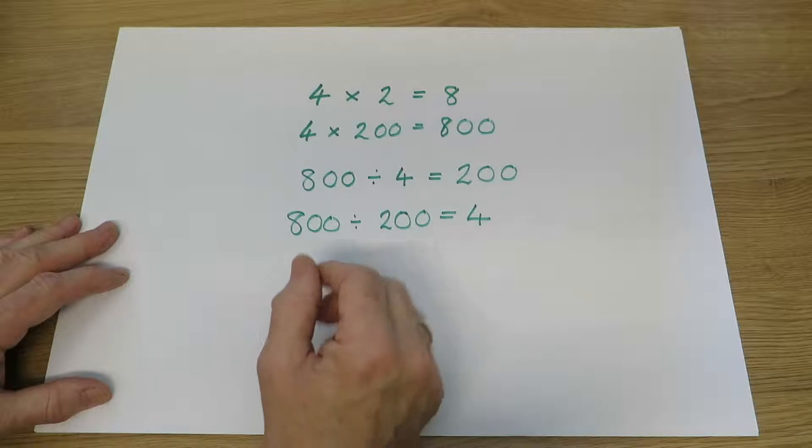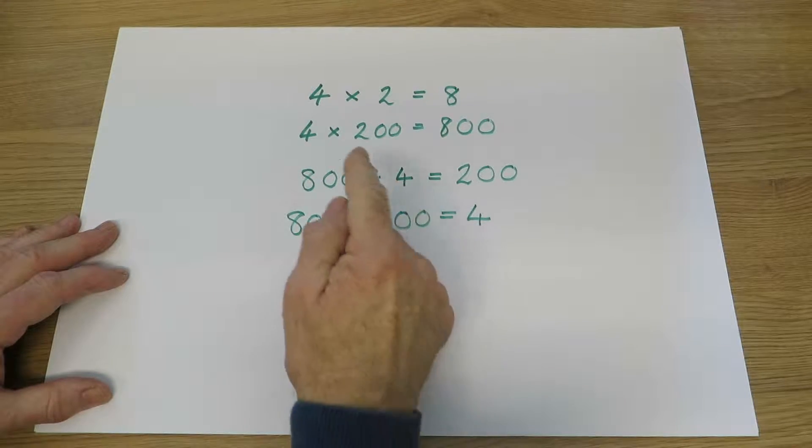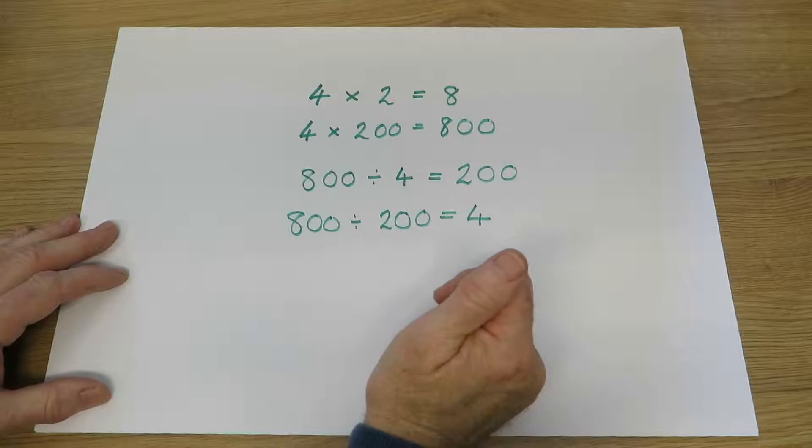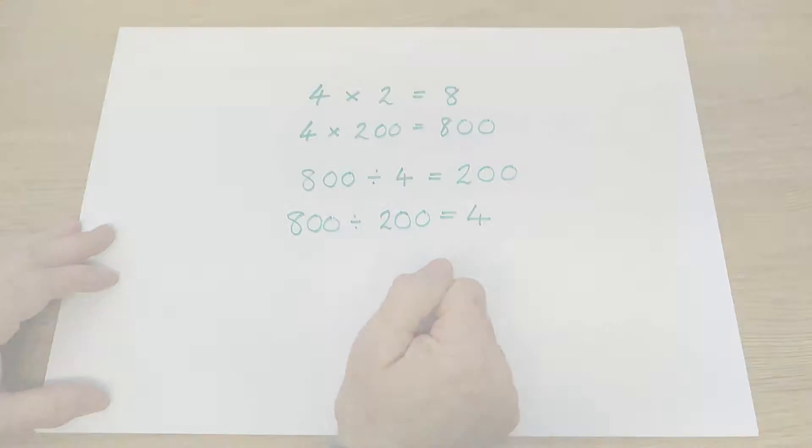So for example, because 4 times 2 is 8, then 4 times 200 must be 800. 800 divided by 4 must be 200, and indeed 800 divided by 200 must be 4.